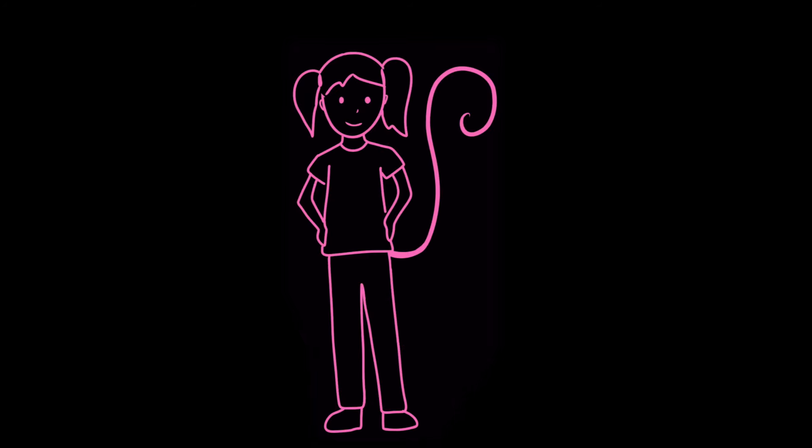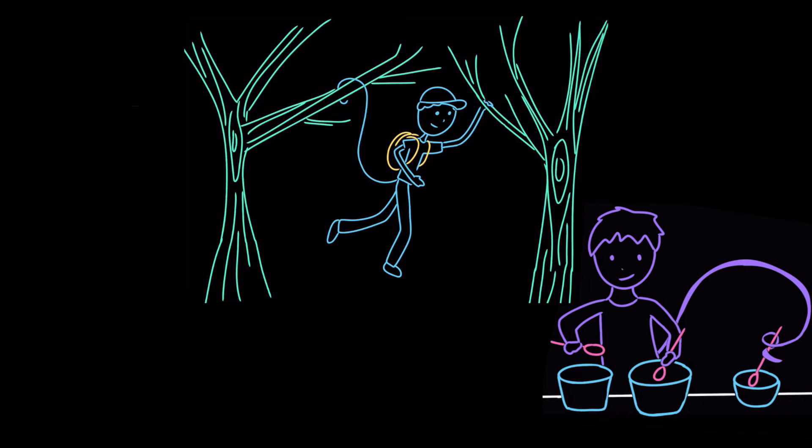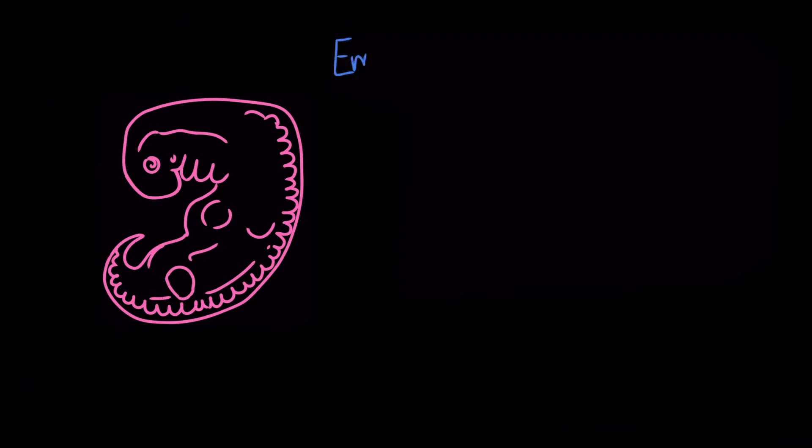Do you ever wish that you had a tail? You could swing your way to school, bake pies more efficiently, and carry an umbrella while keeping your hands free. The funny thing is, you did have a tail once, before you were born. Back then, you were an embryo.